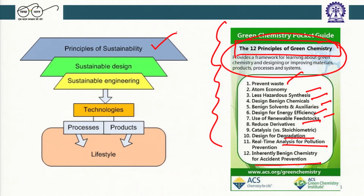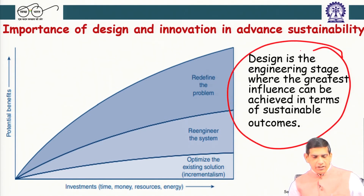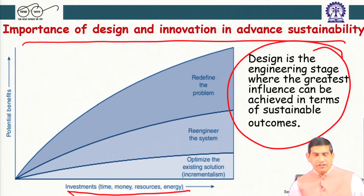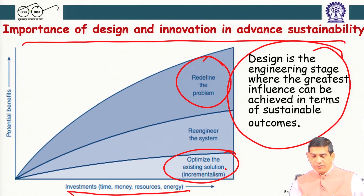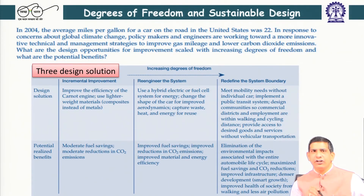We need to look at the principles of sustainability and sustainable design to come up with designs that are better for the environment. When you do design courses in subsequent semesters, keep in mind how to incorporate principles of sustainable engineering — develop technology that is good for the environment, and develop processes, products, and lifestyles that are more useful. Design is the engineering stage where the greatest influence can be achieved in terms of sustainable outcomes.